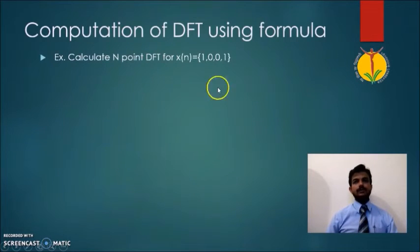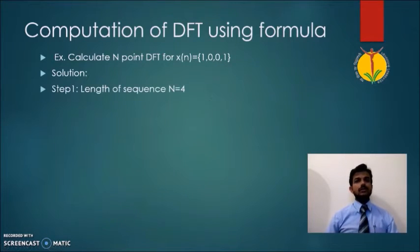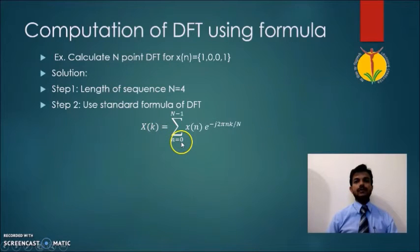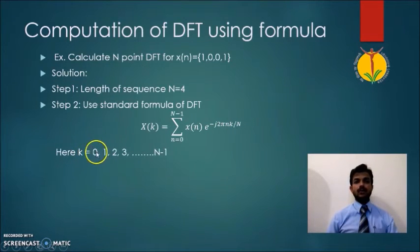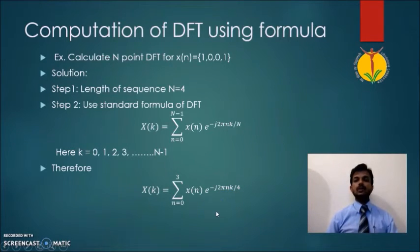Let us take an example. The input sequence X(n) has four samples {1, 0, 0, 1} and we have to determine its DFT using the standard formula. The first step is to determine the sequence length: since there are four samples, N = 4. In the second step, we apply the standard DFT formula X(k) = summation from n=0 to 3 of X(n) e^(-j2πnk/4), where k ranges from 0 to 3.